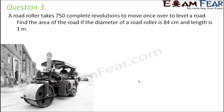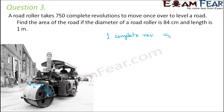Question number 3: A road roller takes 750 complete revolutions to level a road. Find the area of the road if the diameter is 84 centimeters and the length is 1 meter. The road roller is in the shape of a cylinder where the radius and length correspond to the cylinder's radius and height. One complete revolution means the roller covers an area equal to the lateral surface area of the cylinder.